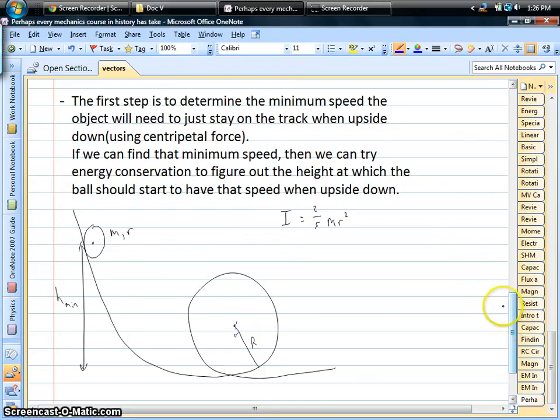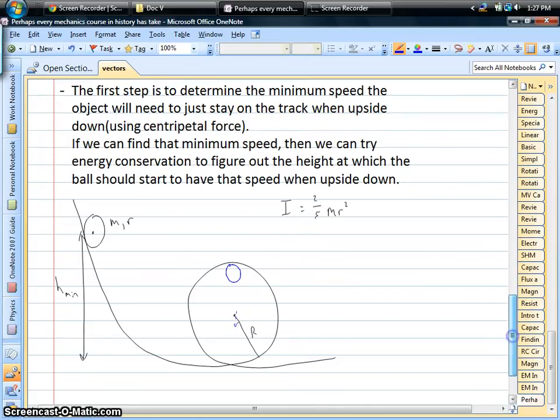That is, it's going just fast enough so that it doesn't fall off the loop when it gets to this point up here, where it's at the top of the loop. Obviously, falling off the track on a roller coaster would be bad, so we don't want that to happen.